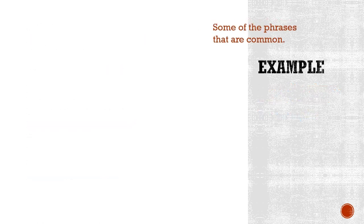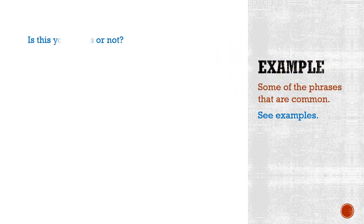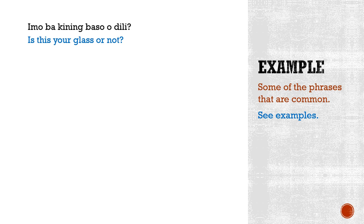Let's have more examples. Take into consideration the question: Is this your glass or not? Expressed in Cebuano, it would be: Imo ba kining baso o dili? Imo is a possessive pronoun that signifies yours. Kini is another pronoun which signifies this. Kining is a shortened form of kininga. Baso is the drinking glass. So: Imo ba kining baso o dili? — Is this your glass or not?